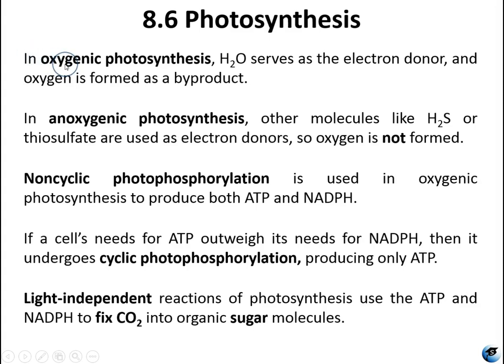In oxygenic photosynthesis, water is the electron donor, and the byproduct is oxygen — which is why plants convert CO2 and release oxygen. In anoxygenic photosynthesis, water is not the electron donor; other molecules such as hydrogen sulfide or thiosulfate serve as electron donors, so oxygen is not formed.